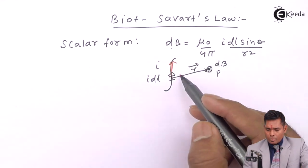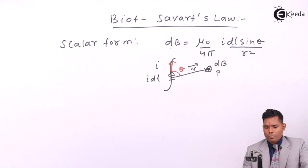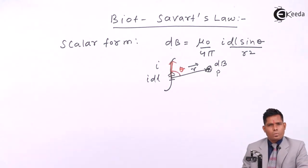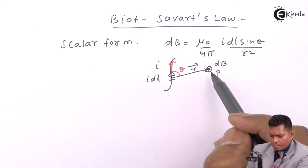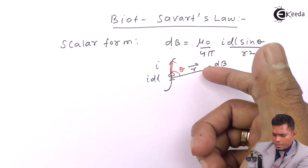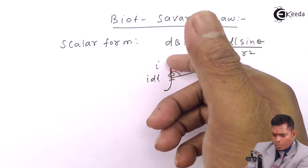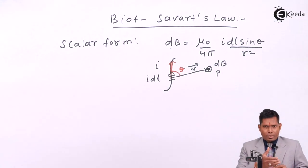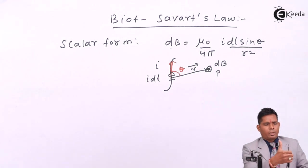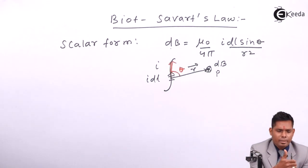This angle is theta. The vector form of the magnetic induction at this point — as we see, the magnetic induction is pointing into the plane of the paper. If I hold the conductor in my right hand such that the thumb must be in the direction of the current, then the curled fingers will give you the direction of the magnetic field.